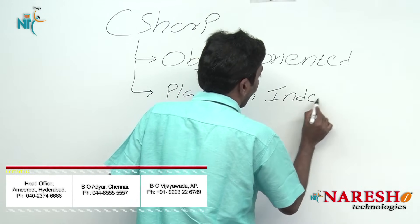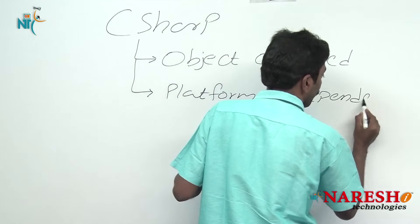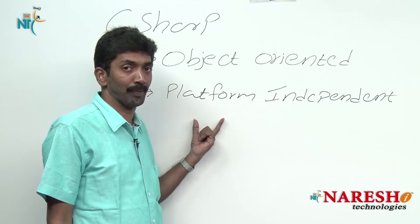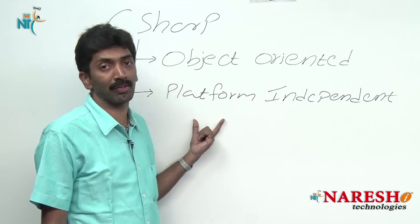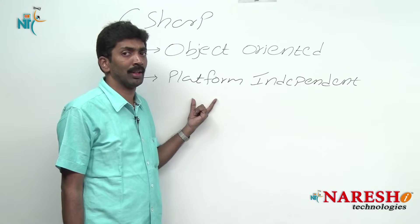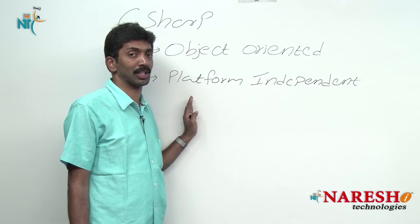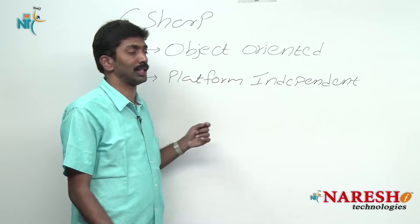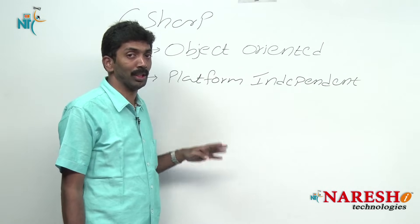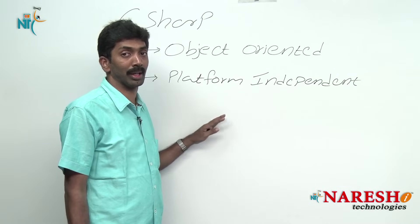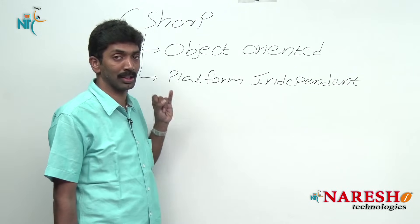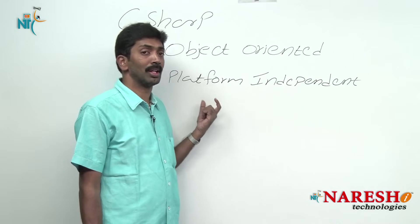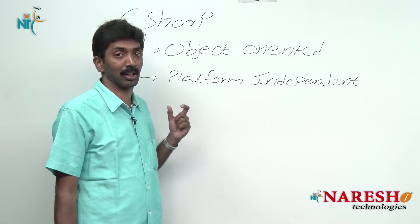The second feature is platform independence. Applications developed using C# can run on multiple platforms. As of the current version of .NET, there is direct support for building C# applications to run on Windows, Android phones, and iPhones. Earlier, third-party support was available, but now there is direct support from Microsoft for all three platforms. This is what we call platform independent, or cross-platform.